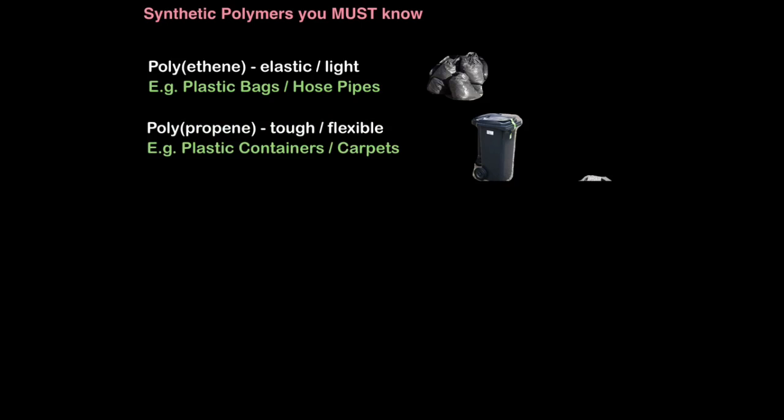Here are four synthetic polymers you must know for your exams. You must know what they are and how we use them because of their specific properties. First is polyethene or polythene, which is elastic and light. For that reason, we can use it to make plastic bags and hose pipes, which are flexible. Polypropene is a tough, flexible synthetic polymer. So we use it to make hardened plastic containers, such as bins, and carpets as well, because of its flexible nature and hard-wearing nature.